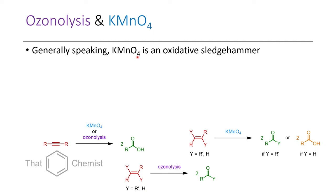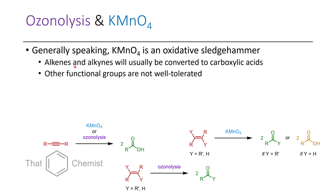Potassium permanganate is a sledgehammer — it's a very strong oxidant that can do all sorts of reactions to different organic molecules, so if you're using it, it typically is when everything else fails. Both alkenes and alkynes will be converted to carboxylic acids. However, if you have alkenes with an additional R group, it would be converted to a ketone instead. In general, other functional groups are not well tolerated, and this is why I'm not going to go into too great detail in terms of use or mechanisms for potassium permanganate.